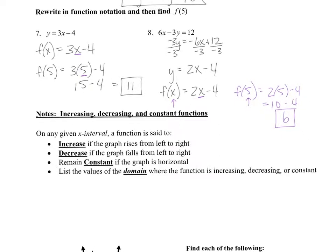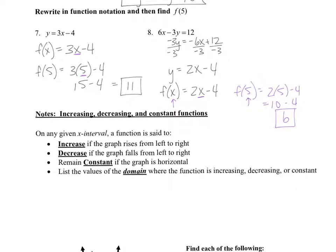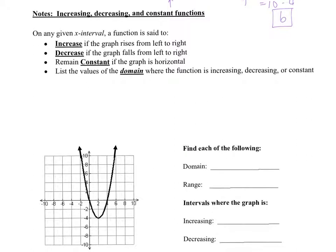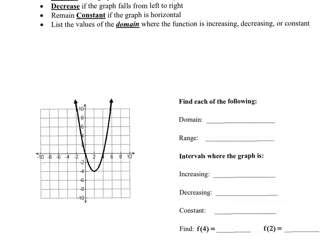We're going to do one of these increasing-decreasing problems, and we'll do the others in class. You're given an actual picture of a graph — like this parabola — and you have to tell me where the parabola is increasing, where it's decreasing, where it remains constant, and figure out the domain and range. We can do the domain and range first, though it's a little tricky because it's given as a graph.